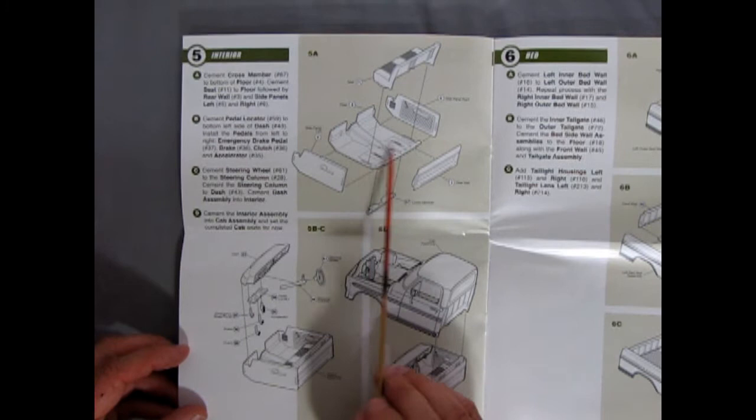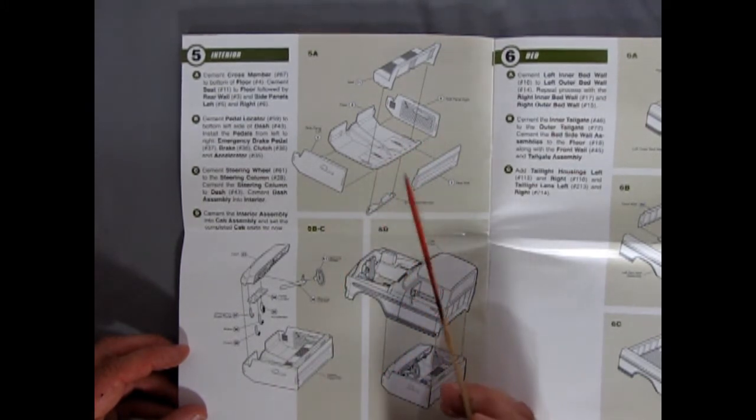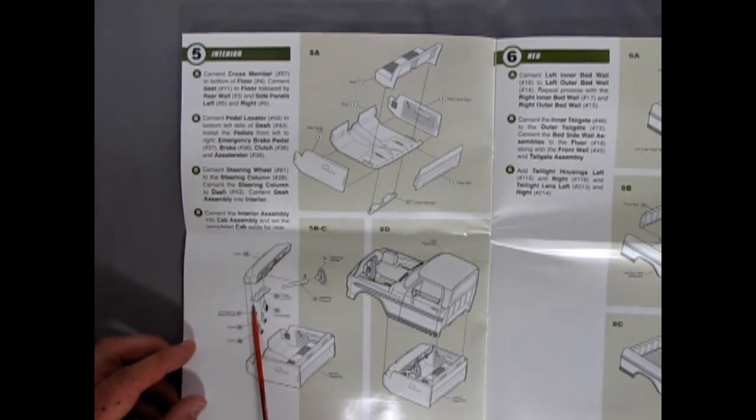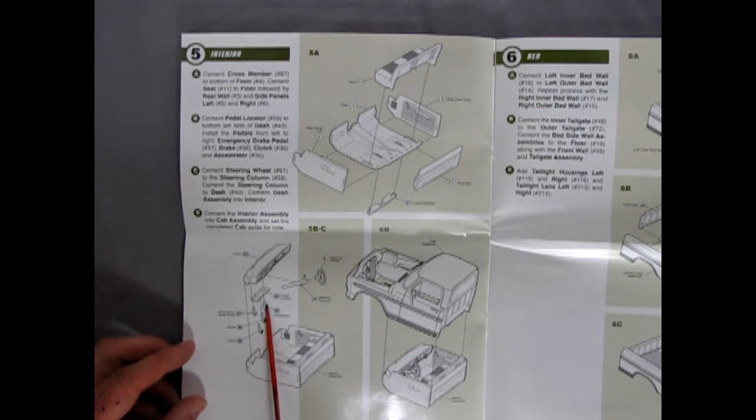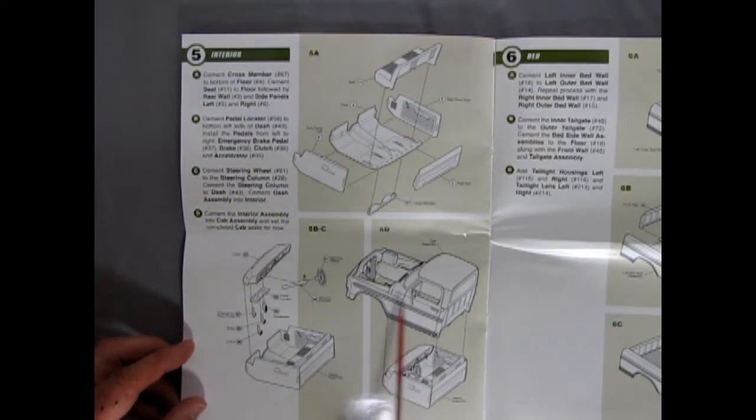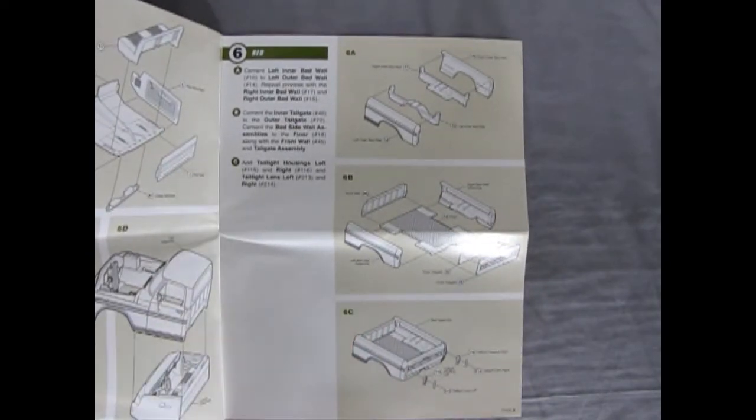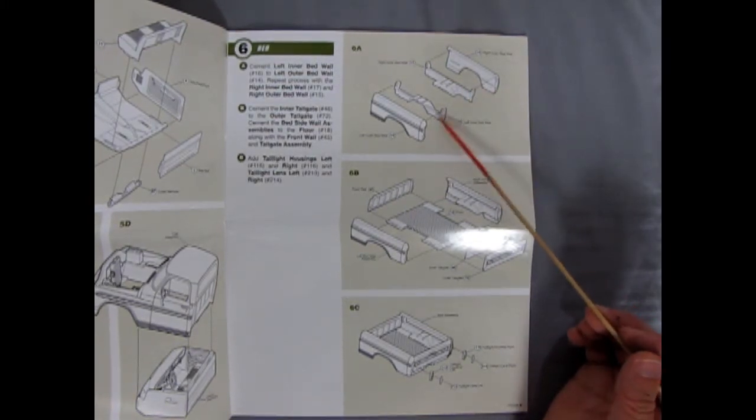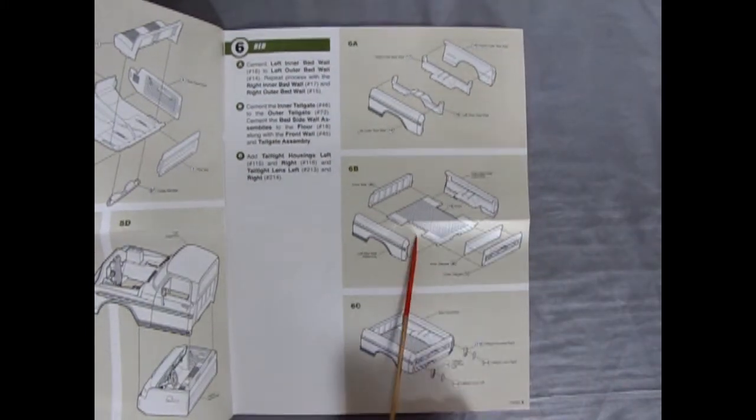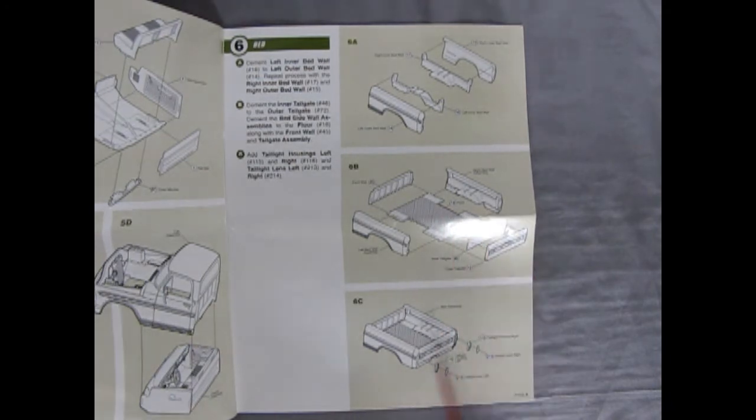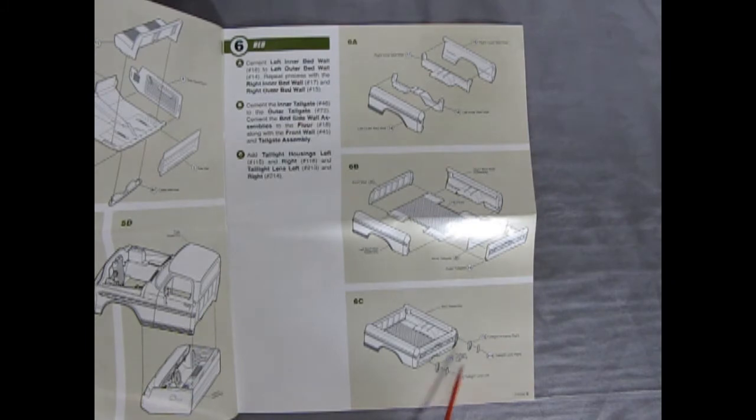Section five shows our bench seat going into our floor pans here with the right and left side panels. There's a cross member goes up underneath and then the rear wall. Then here we get into more of the dashboard type of thing. Here we have our clutch, our brake, our gas pedal or accelerator and the emergency brake. All go into this pedal locator which glues up under the dash. We've got our steering column here with the steering wheel, and it'll all fit into our interior assembly which will then pop up into our body assembly.